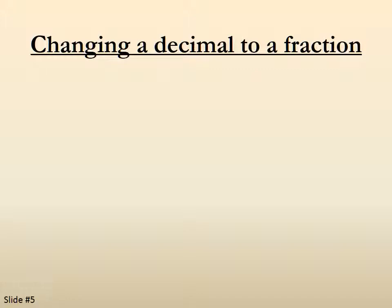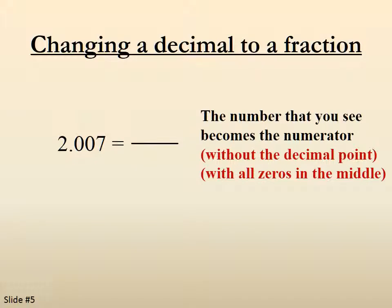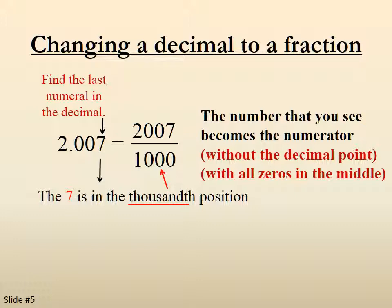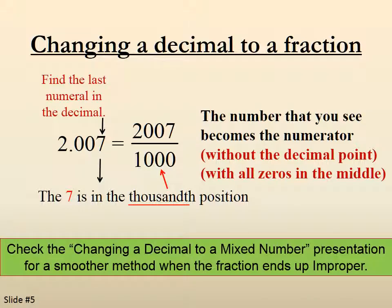2.007. We draw the fraction bar. The number that you see becomes the numerator: 2007 — again, without the decimal point, and in this case we do need all the zeros that are between the 2 and the 7. We find the last numeral in the decimal, which in this case is a 7. The 7 happens to be in the 1,000th position, so we put 1,000 in the denominator. So 2.007 as a fraction becomes 2,007 over 1,000. You'll notice that this is improper — improper means the numerator is larger than the denominator. We could convert this into a mixed number, or we could check out the presentation on changing a decimal to a mixed number, which has a smoother method for converting a decimal into a fraction when the fraction is going to end up improper.